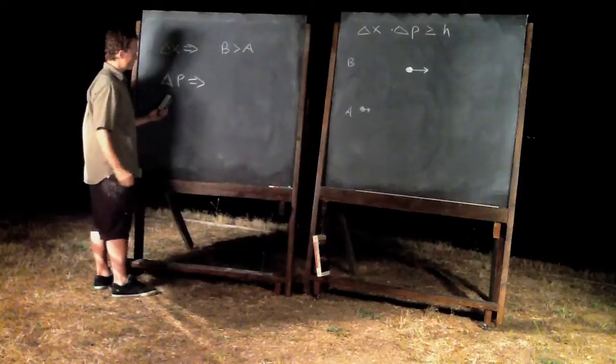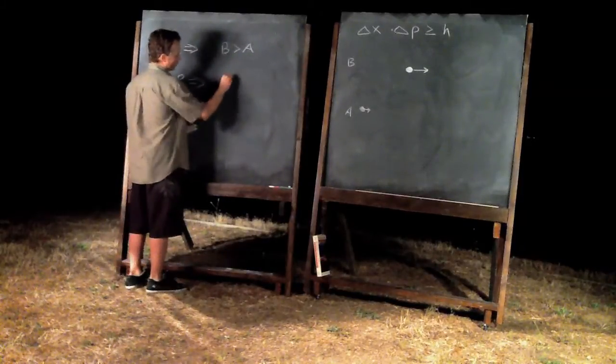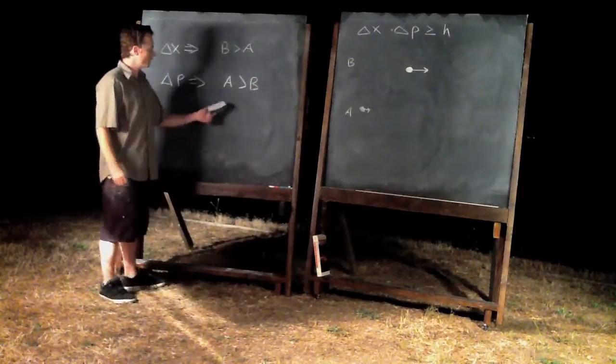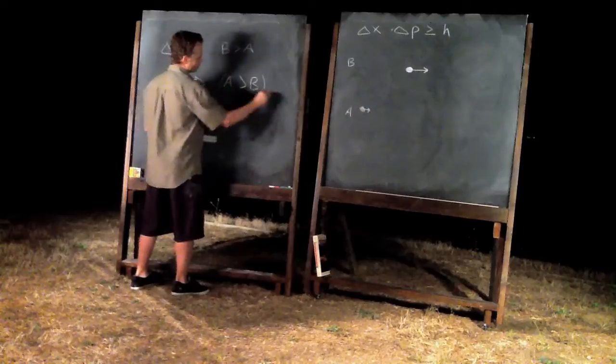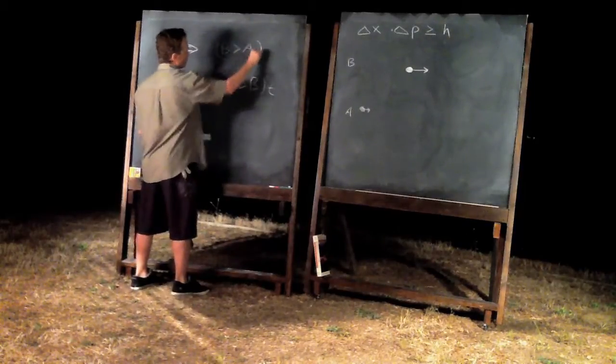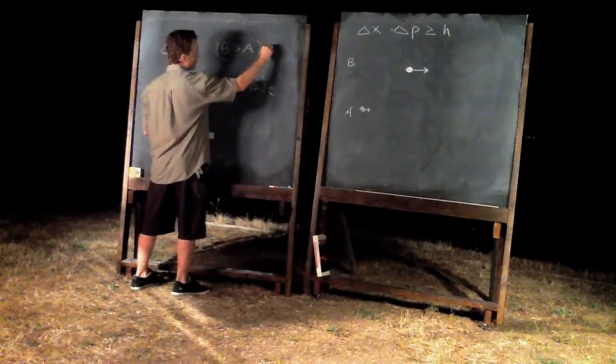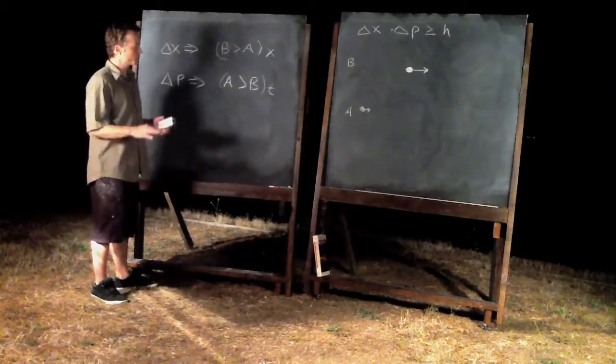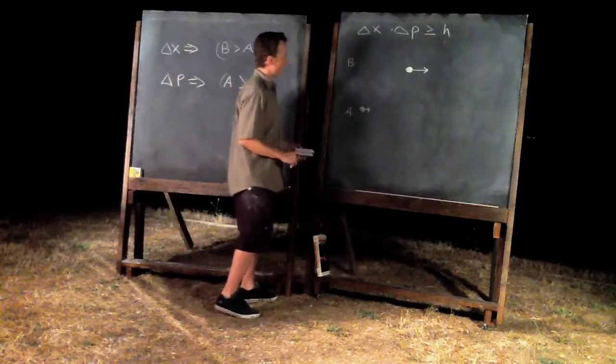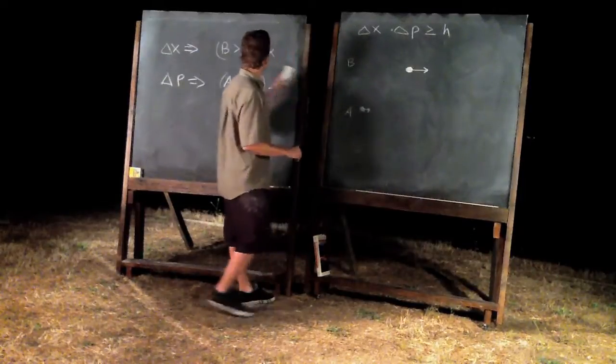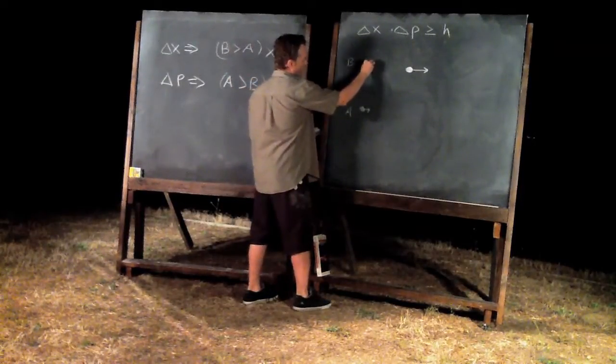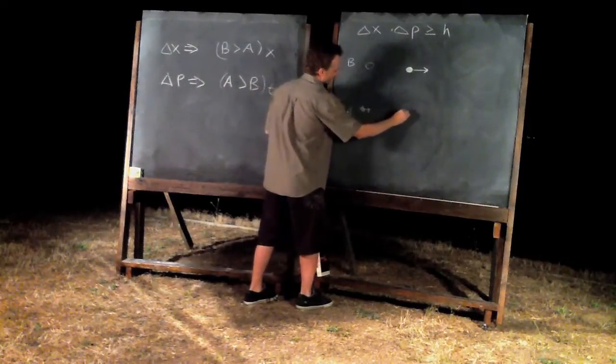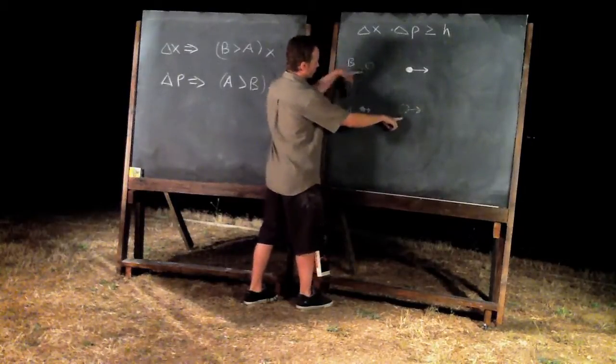In the same way, since B is traveling with greater momentum B is experiencing a time dilation that A is not. Because of the time dilation associated with moving at relativistic speeds and also the time dilation associated with an increase in mass, in a way in relation to momentum A is ahead of B in time. A is ahead of B relative time and B is ahead of A relative position. This is extremely interesting.